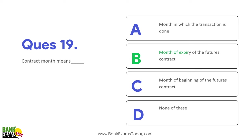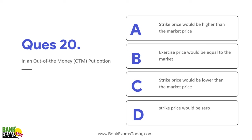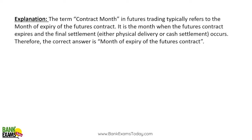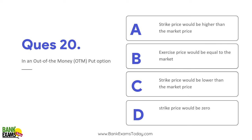Question 20: Contract month means the month of expiry of a futures contract. When you see a contract name, the month written (e.g., NOV means November) is the expiry month. You can pause and read the full explanation if you have time.